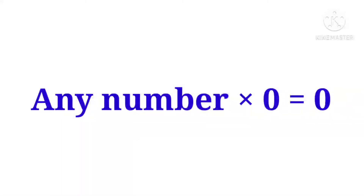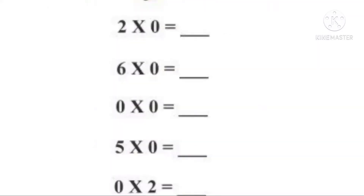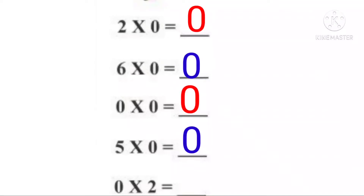Any number multiplied by zero, we get zero. For example: zero multiplied by zero equal to zero; six multiplied by zero equal to zero. Let's do the exercise: two multiplied by zero — zero; six multiplied by zero — zero; zero multiplied by zero — zero; five multiplied by zero — zero; zero multiplied by two equal to zero.